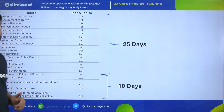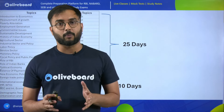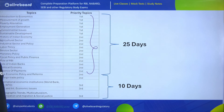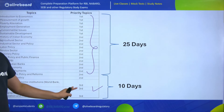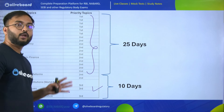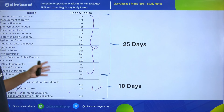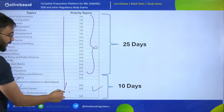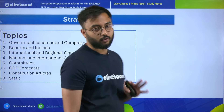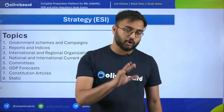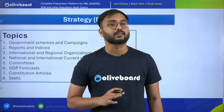When looking at strategy for ESI, the dynamic topics include: government schemes and campaigns, reports and indices, international and regional organizations, national and international current events, committees, GDP forecasts, constitution articles, and static ESI. These are the preferential topics for starting your preparation. You can prepare them individually or work on all of them over six to eight months.